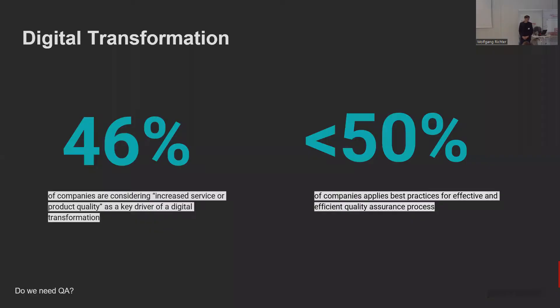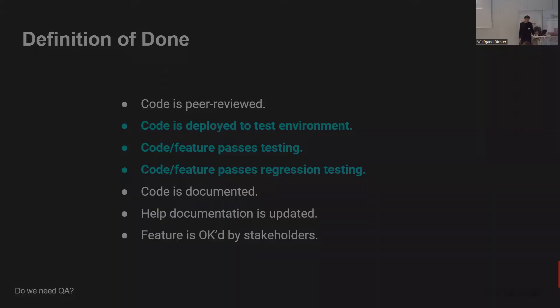But let's move from stories to facts. According to research published by Capgemini recently, around 46% of companies consider increased software or product quality as a key factor for digital transformation. But at the same time, less than 50% of companies applied best practices for effective and efficient quality assurance processes.